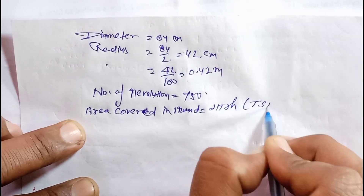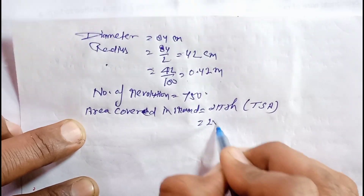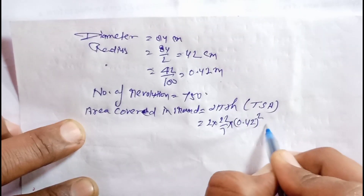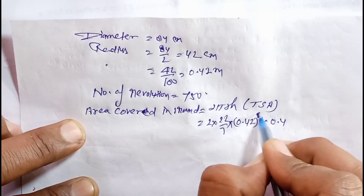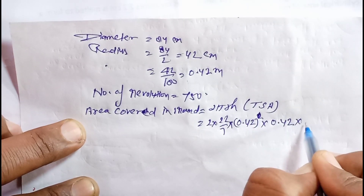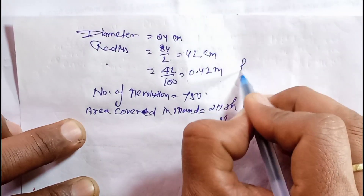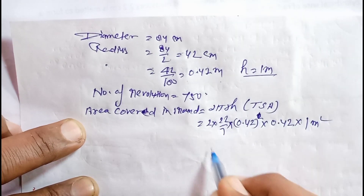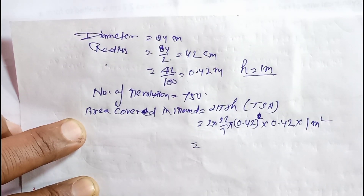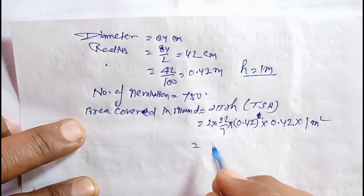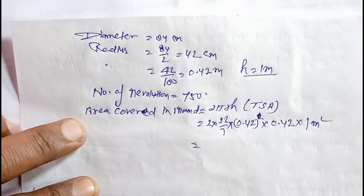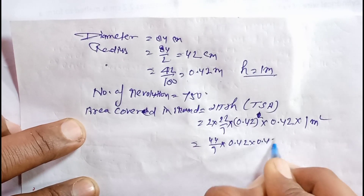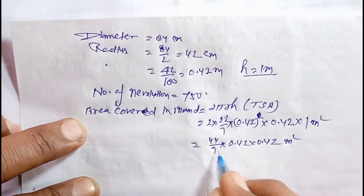Area covered in one revolution = 2πrh, which is the curved surface area of the cylinder. So: 2 × (22/7) × 0.42 × 1. Here, h = 1 meter (the length of the road roller). Now divide 0.42 by 7.